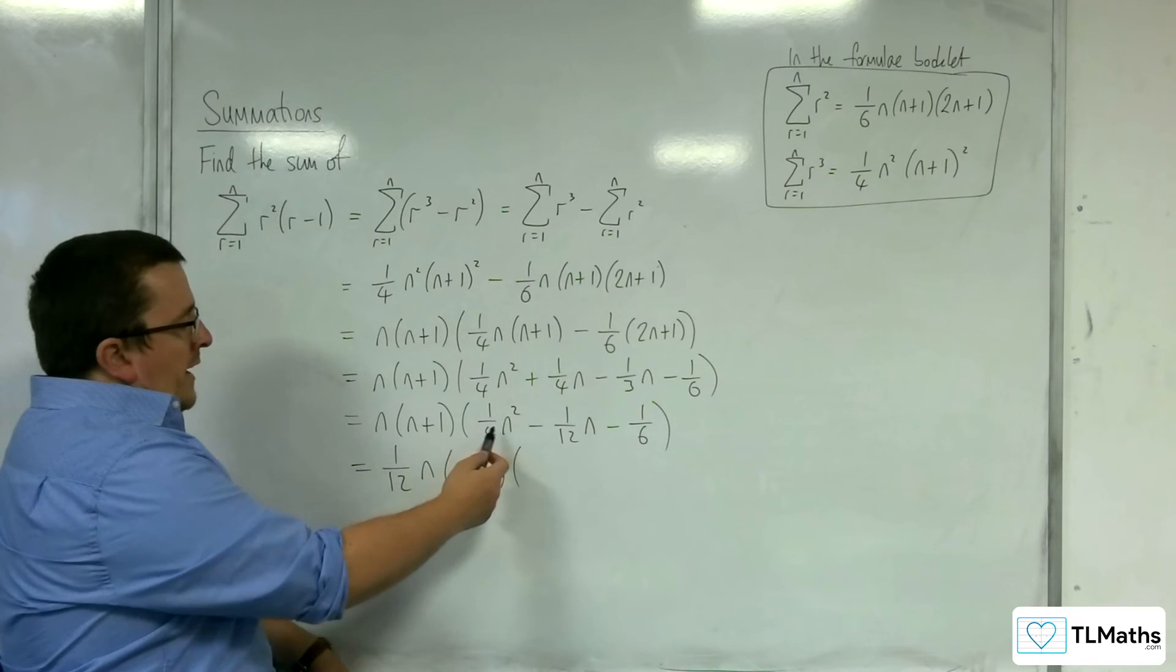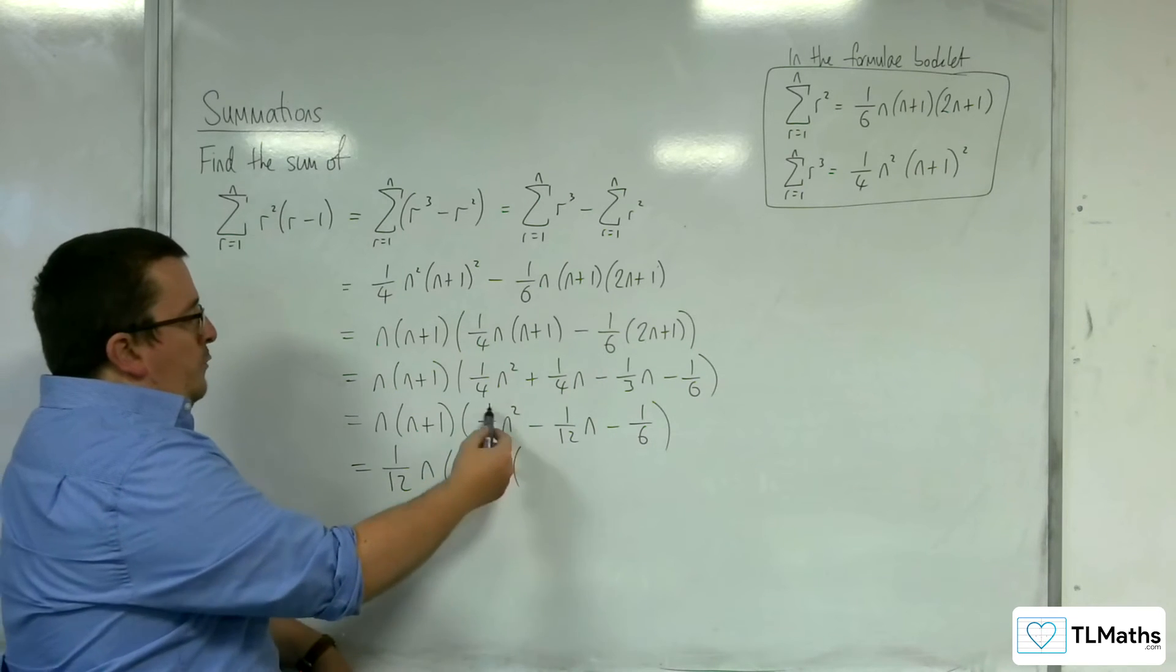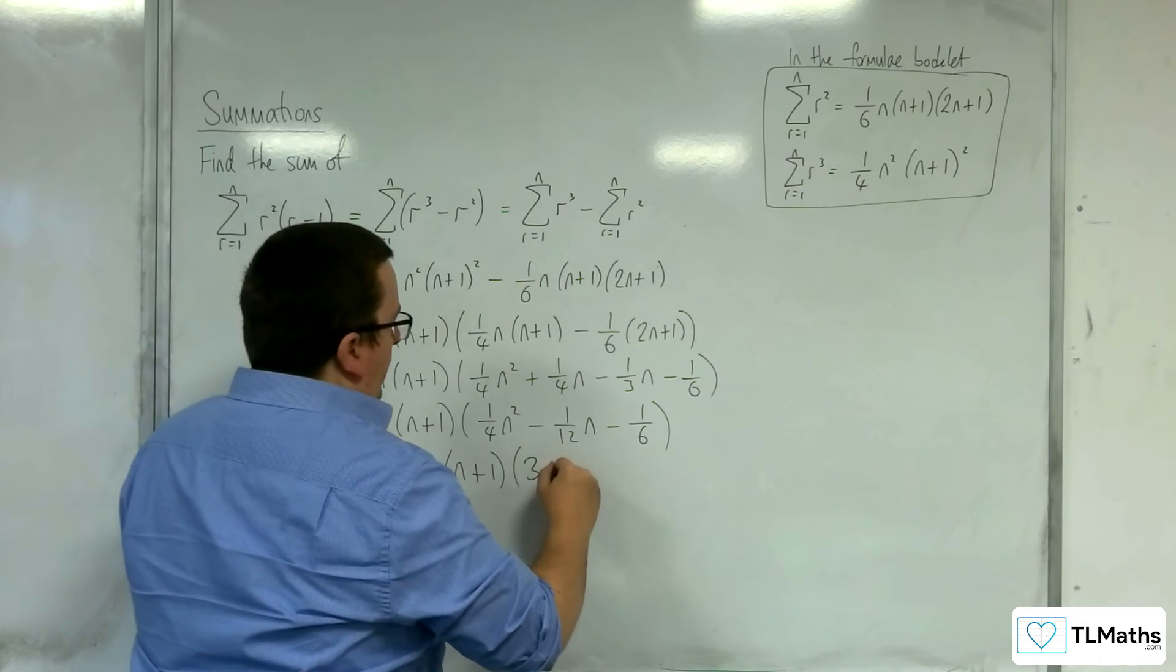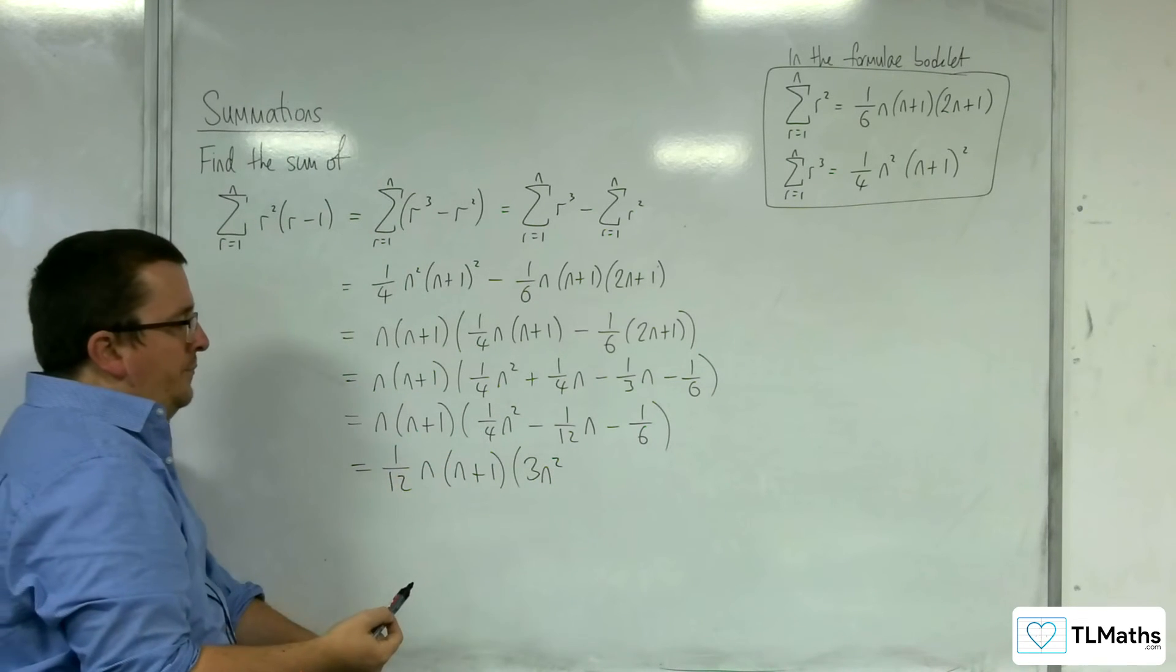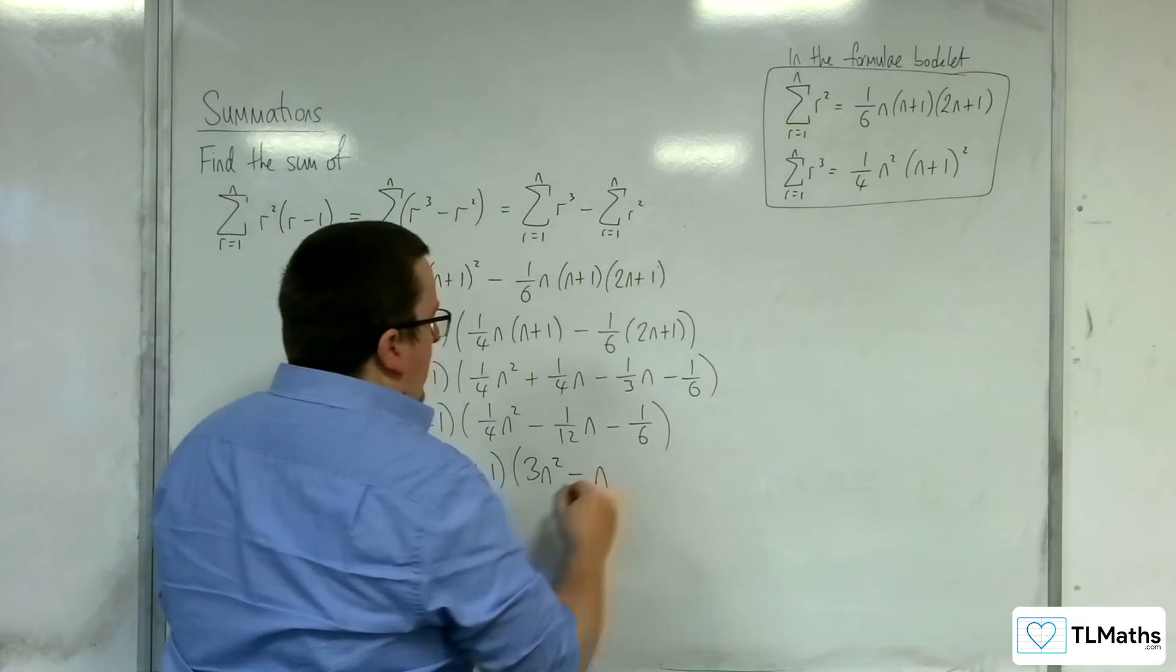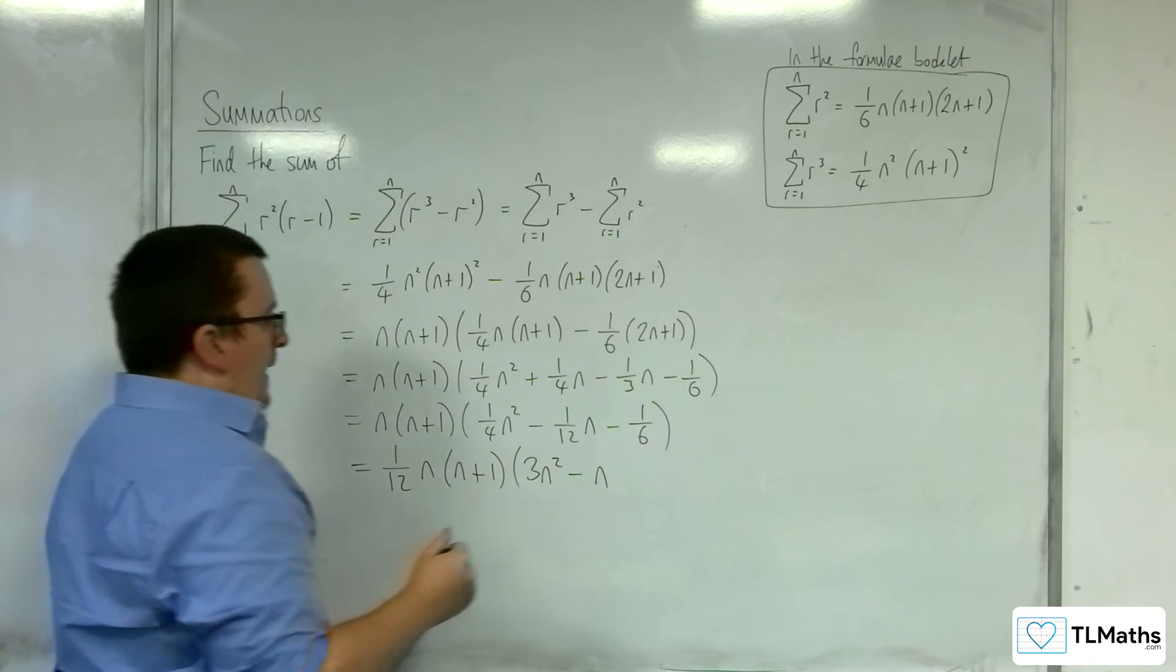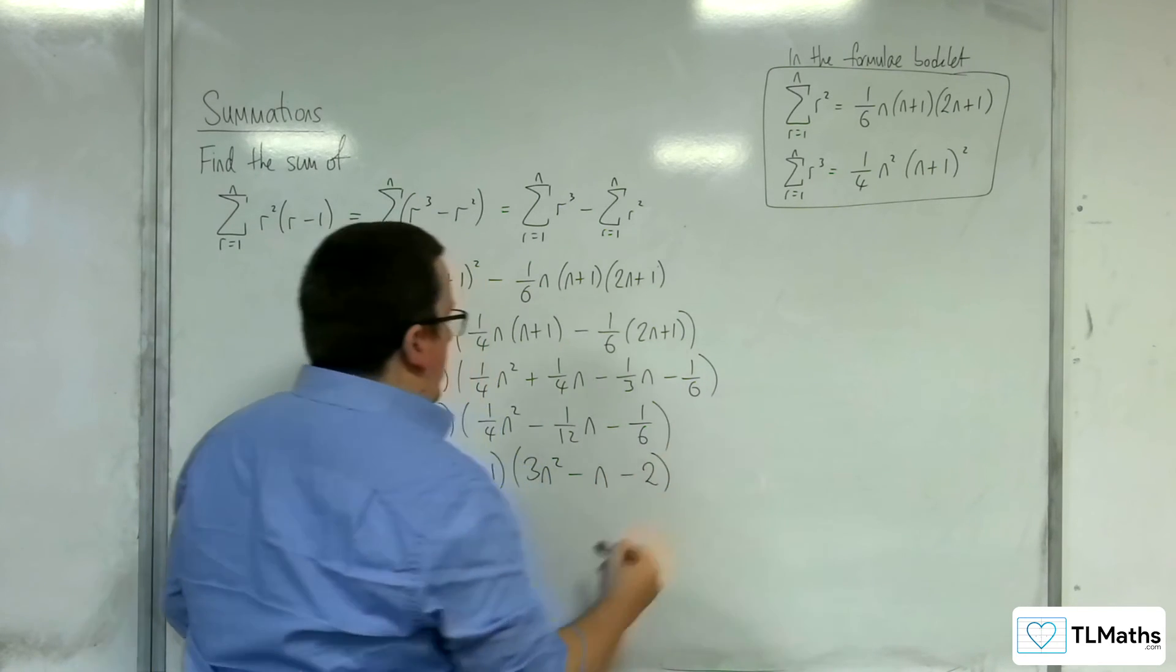So, taking 1 twelfth out, I would have to be left with 3n squared. 3 divided by 12 is a quarter. We'd have minus n. And it would be minus 2, wouldn't it? OK.